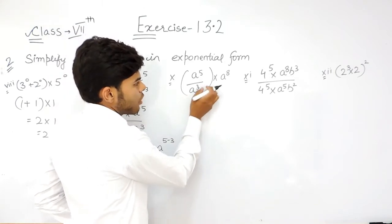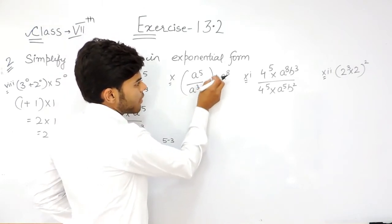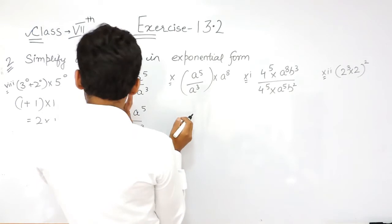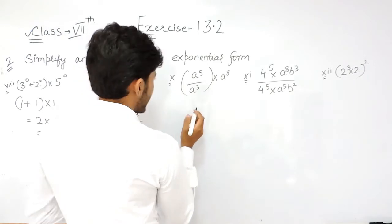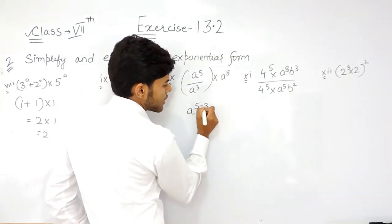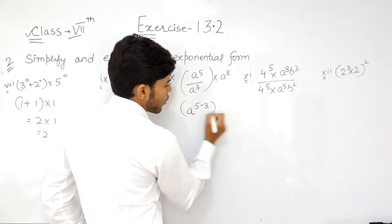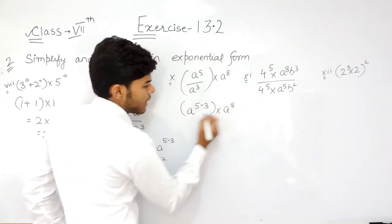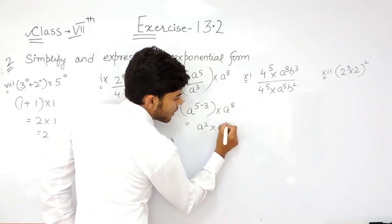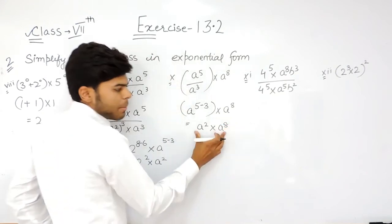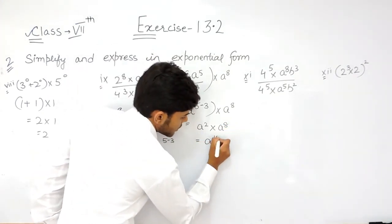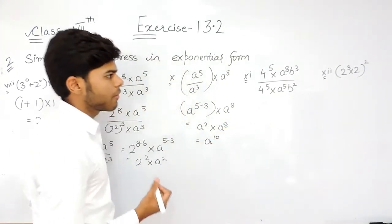In this question, the power will go to the numerator and change its sign, so that will be 8 to the power 5 minus 3, whole multiplied with a to the power 8. That gives a to the power 2 into a to the power 8. Same base, so powers get added up, and our answer will be 8 to the power 10.